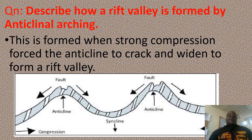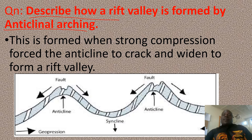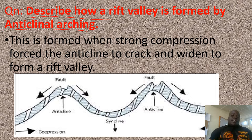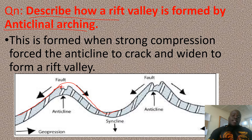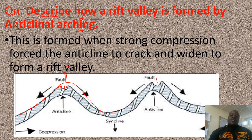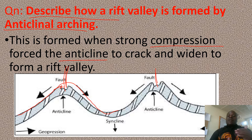A question: you can be asked to describe how a rift valley is formed by an anticline. Remember, during folding we said an anticline is a folded hill — a hill on a folded landscape. But when the peak of the hill is subjected to tension, it cracks. And the crack keeps on widening to form a rift valley. It is formed when strong compression and cracking force the anticline to crack. After continuous compression and cracking, the widening of the gap forms a rift valley.